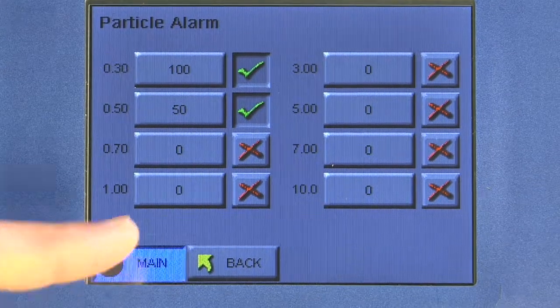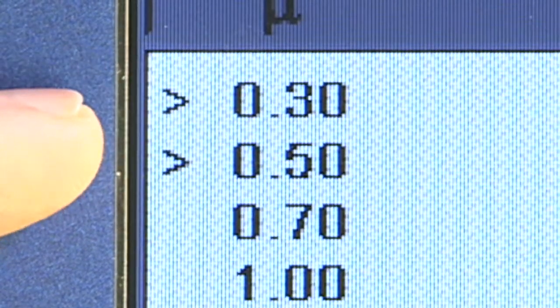Now I want to go back to the main screen, and you're going to see on the main screen these little indicators that tell you that an alarm limit has been set for 0.3 and for 0.5 micron.